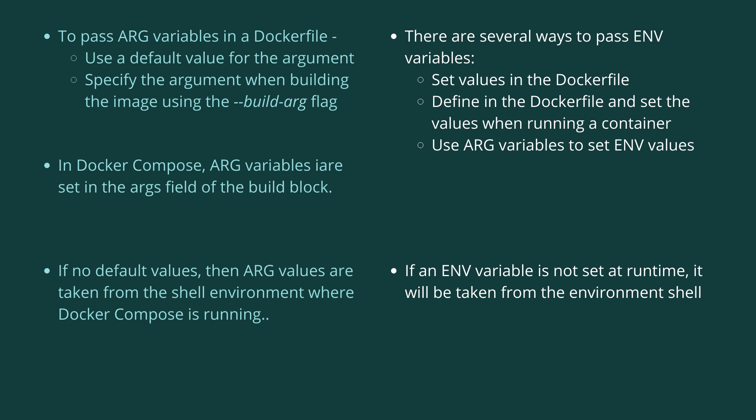Similarly, to pass an ENV variable, there are three ways: you can set the values directly in the Dockerfile, or you can define them in the Dockerfile and then set the values while running a container, or you can use ARG variables to set ENV values. In docker-compose, ARG variables are set in the args field of the build block.